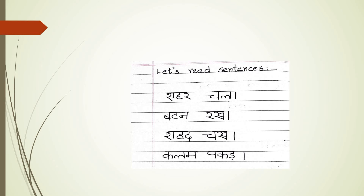Let us read. Shahar, Shahar, Shahar. Chal, okay Shahar, Chal. Button, Rak. Shahar, Chak, Column, Pucket. Okay so — Shahar, Chal, Button, Ruck, Shahar, Chuck, Column, Pucket.